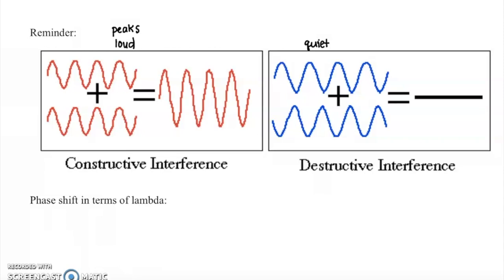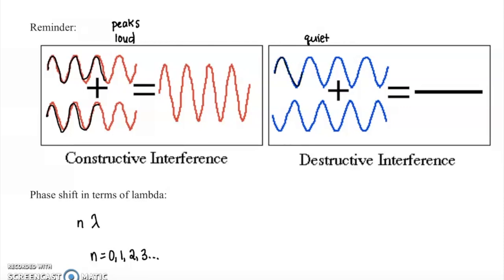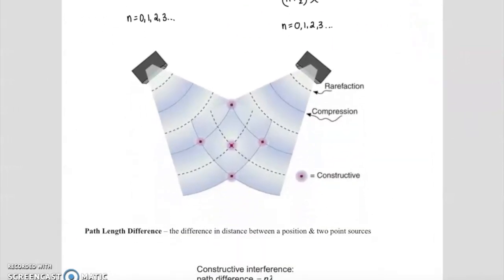A reminder from our previous lecture about the phase shift in terms of lambda for constructive versus destructive interference. If you have two waves shifted from each other by lambda or a multiple of lambda — where n equals 0, 1, 2, 3, and so on — you will get constructive interference. For destructive interference, the phase shift must be such that a trough lines up with a crest. You want all of the half wavelengths, written as (n + 1/2)λ where n could be 0, 1, 2, 3, and so on. Any time you have a whole wavelength shift, you get constructive; any time you have a half wavelength shift, you get destructive.